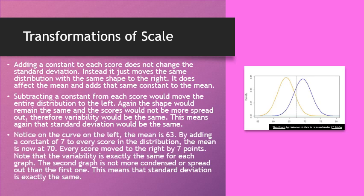Looking at the yellow curve on the left, the mean is about 63. If you added a constant of 7 to every score in the distribution, you would have what looks like the blue curve on the right. The new mean would become 70. By adding 7 points to every score and re-graphing it, the graph looks exactly the same. The variability is exactly the same, and the standard deviation is exactly the same.